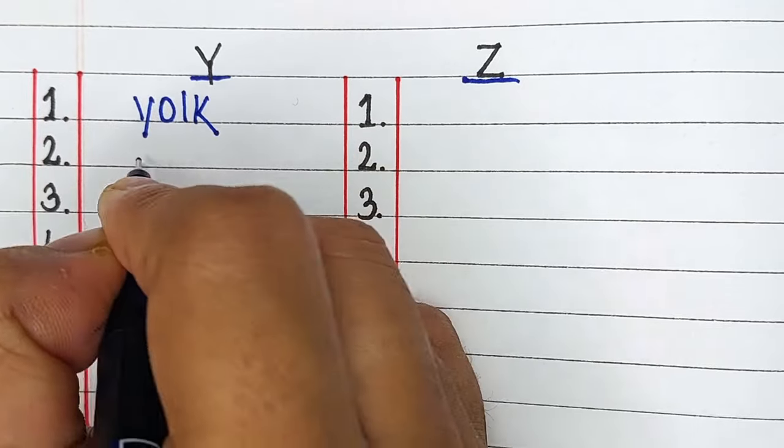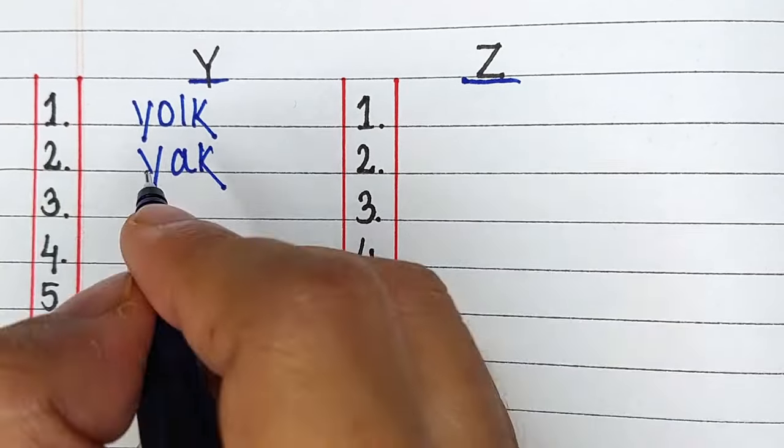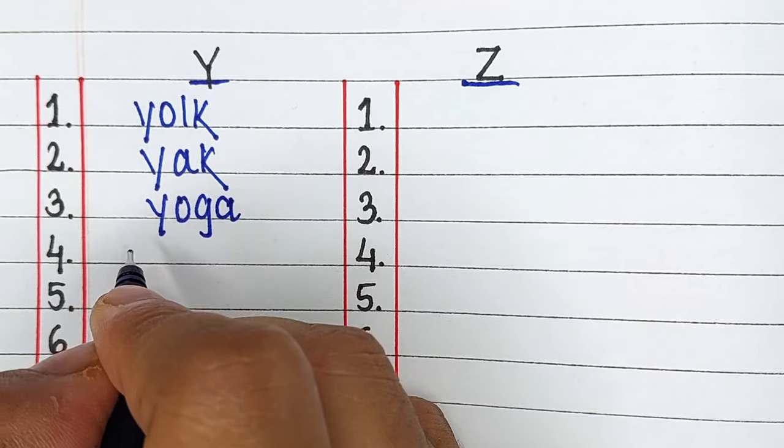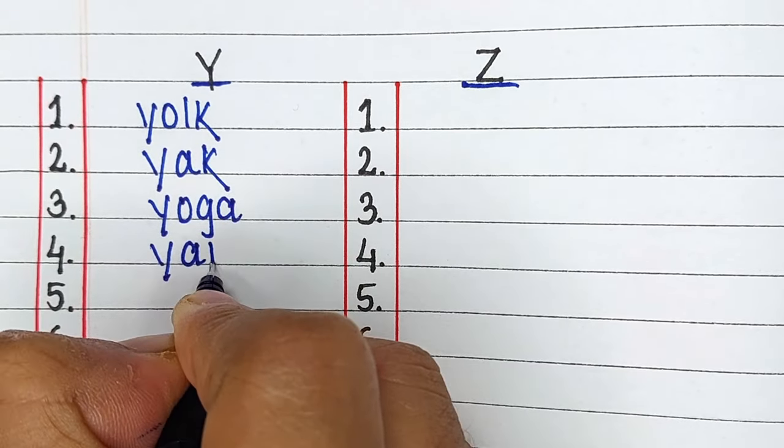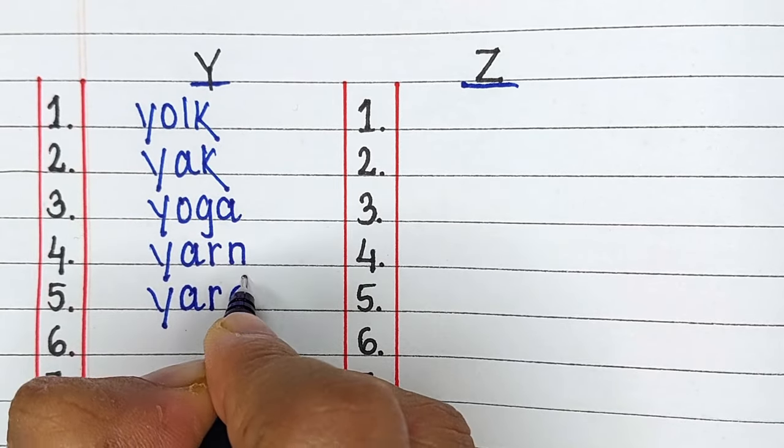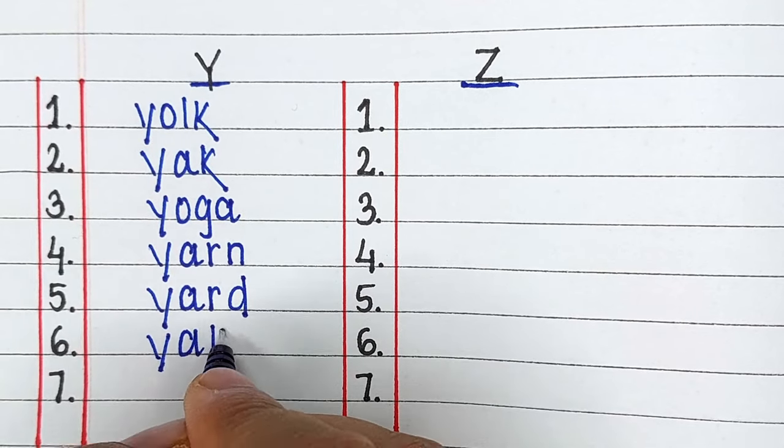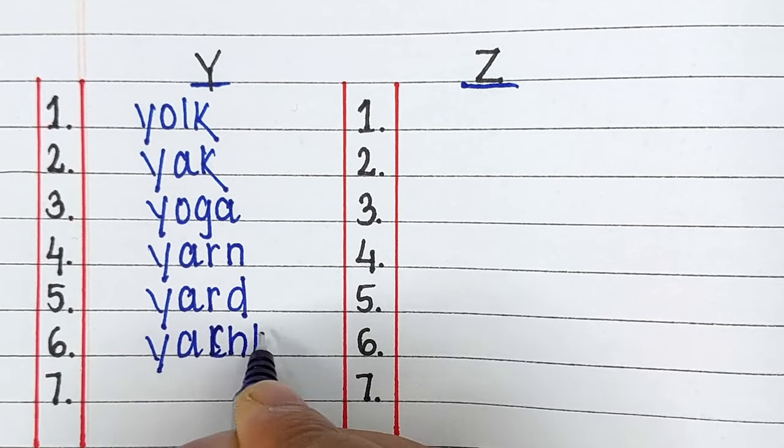Next up we have Alphabet Y. The words starting from letter Y are Yolk, Yak, Yoga, Yarn, Yard, Yacht and Yam.